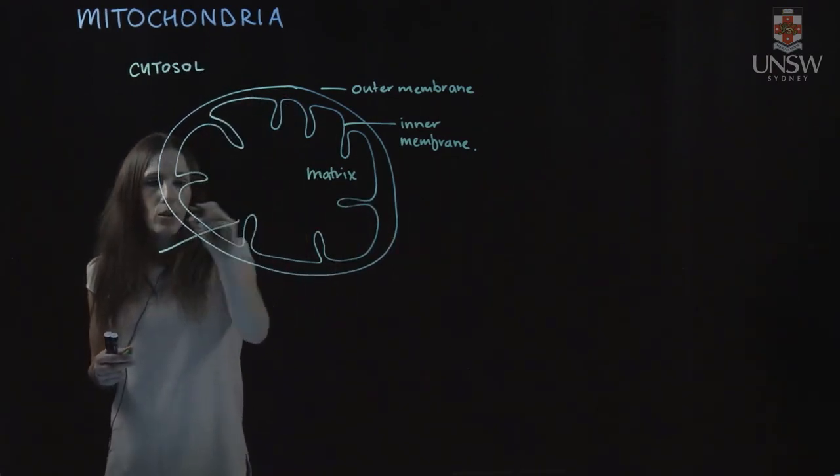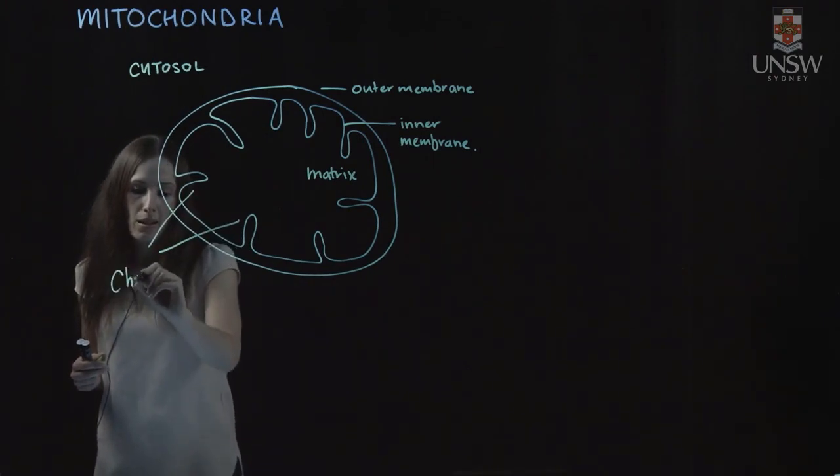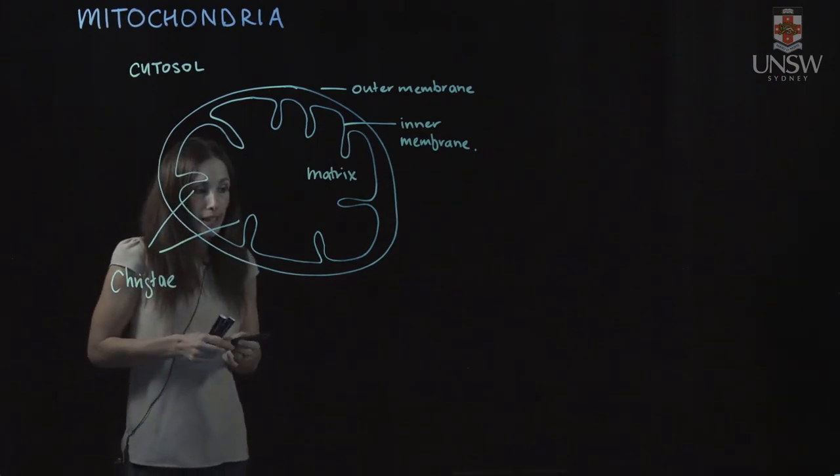These folds are called cristae, and they maximize the surface area of the inner mitochondrial membrane.